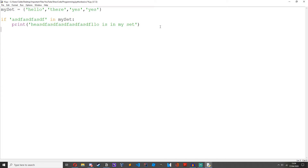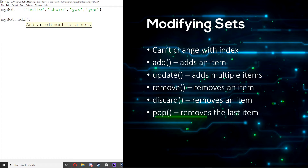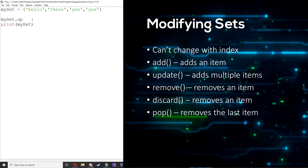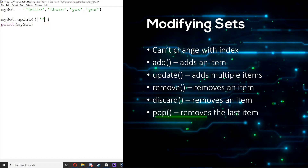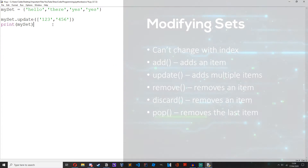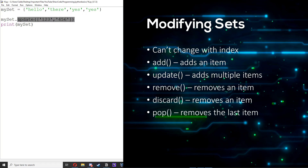Now on to modifying sets. Because they are unordered there is no way to change items with an index, but you can add or remove items. To add items we use the add method: my_set.add('one two three'), then print my_set, and we get 'one two three' added. To add more than one item at once we use the update method: my_set.update(['one', 'two', 'three', 'four', 'five', 'six']).